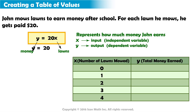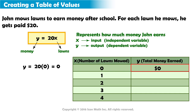First, we will plug 0 into the equation in place of x. y equals 20 times 0. 0 multiplied by any number equals 0, so y equals 0. If John mows 0 lawns, he will not earn any money.